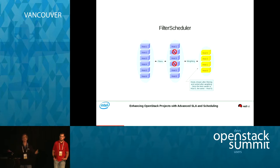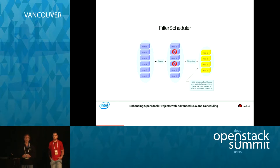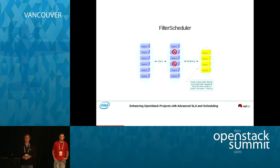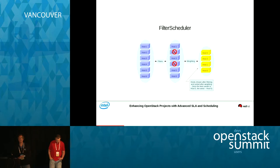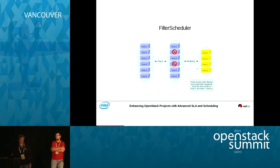Now the question is: which of those four hosts do you want to use? There's a weighting function that will take those hosts and rank them in order from the most appropriate to the least appropriate — in this case, hosts five, three, one, six, where five is the most appropriate and six is the least. This is how we come up with the best scheduling decision we can based upon the information and what the user is looking for.